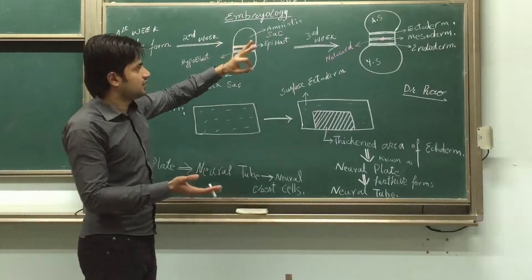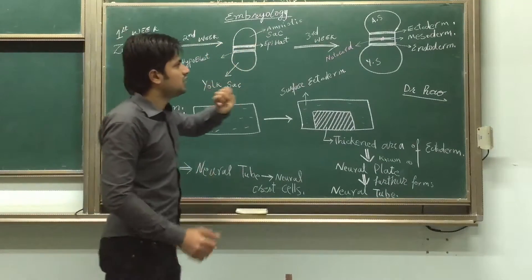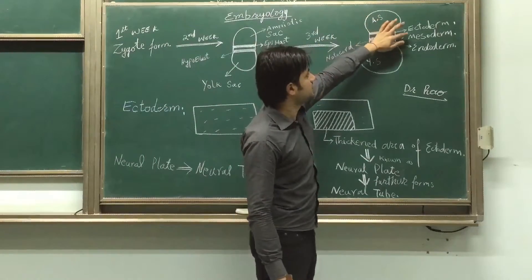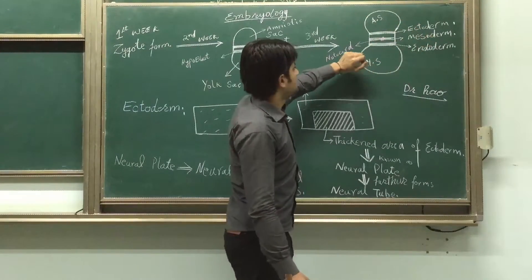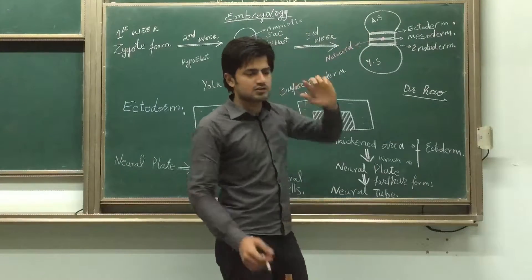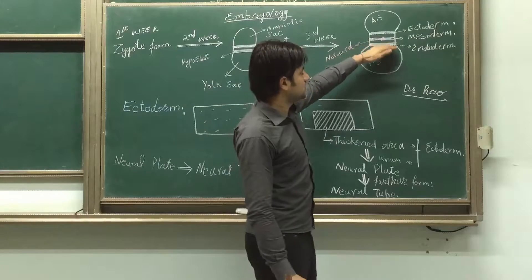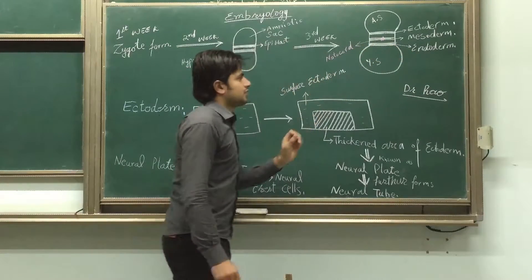The upper layer that is near the amniotic sac is known as ectoderm. The middle layer is mesoderm, and the other one, the last one, is endoderm.